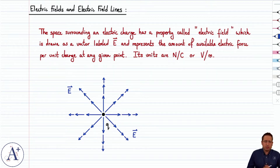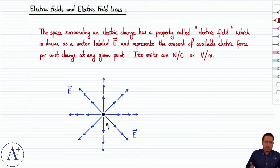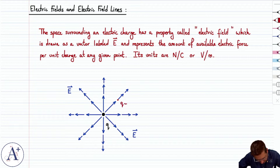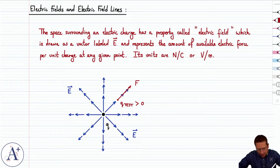We have an electric field that has a specific direction — and that direction is the direction in which a positive test charge would experience a force if it were placed in that electric field. A test charge is just a charge with which you perform a test or an experiment. So if you have a positive test charge Q-test and you place it right here where the electric field points, say 45 degrees above the horizontal, the direction of the electric field tells you the direction of the electric force that positive test charge is going to feel.